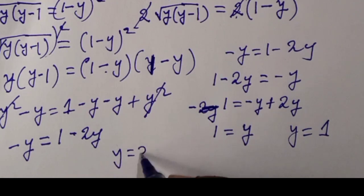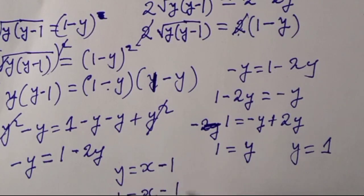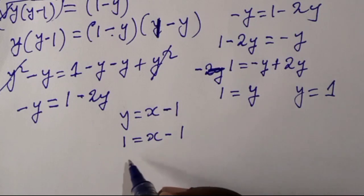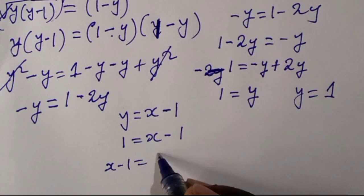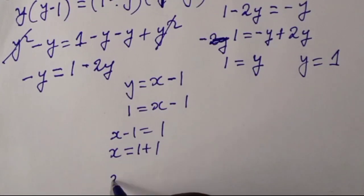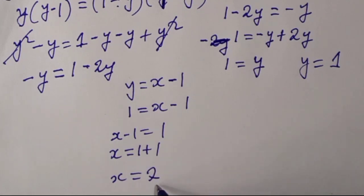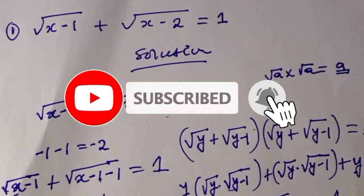Remember that we said y equals x minus 1. So we substitute y equals 1: 1 equals x minus 1, then x minus 1 equals 1, then adding 1 to both sides gives x equals 2. So this is our answer. Thank you for watching and don't forget to subscribe and turn on notifications.